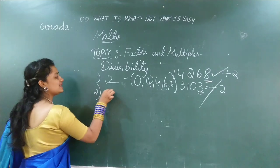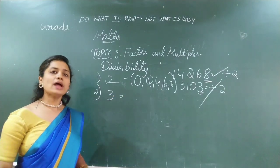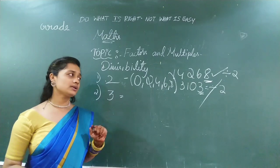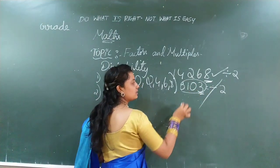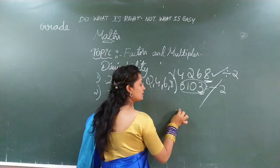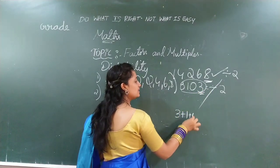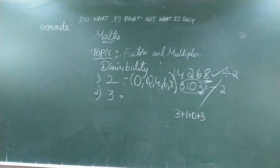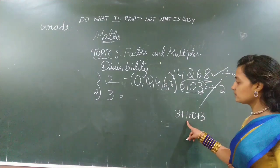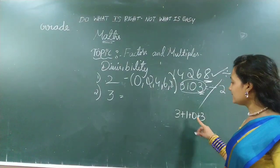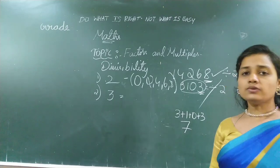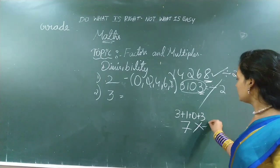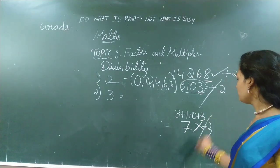Now, let's go for divisibility by 3. For 3, you should add all the digits of the number and check whether the answer is divisible by 3 or not. Like, let's take an example. You should add all the digits: 3 + 1 + 0 + 3 = 7. Now, is 7 in the 3 times table? No. So, this number cannot be divided by 3.